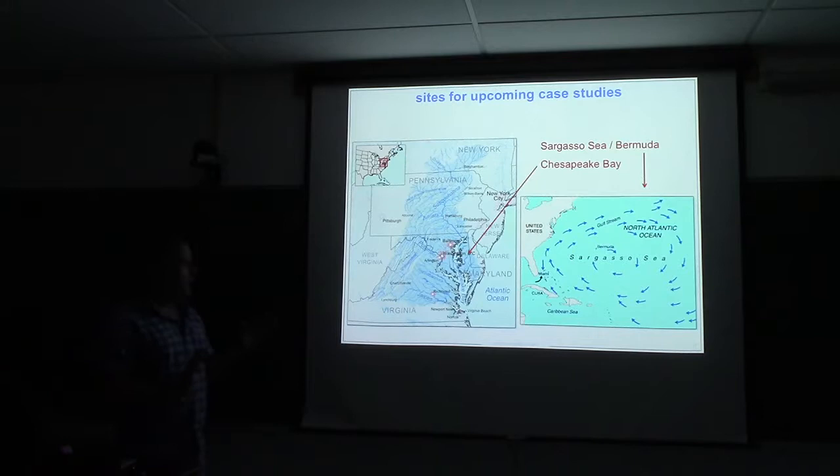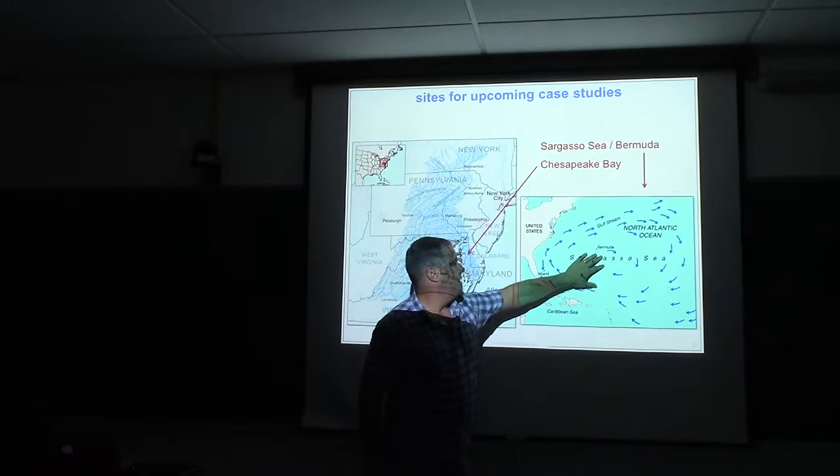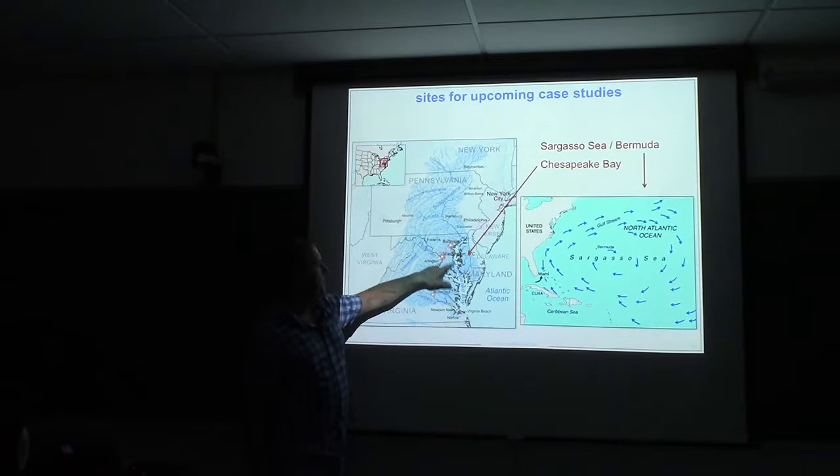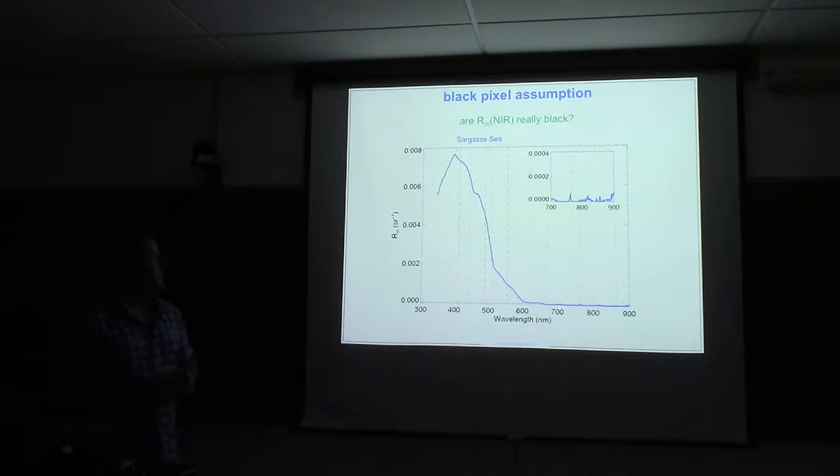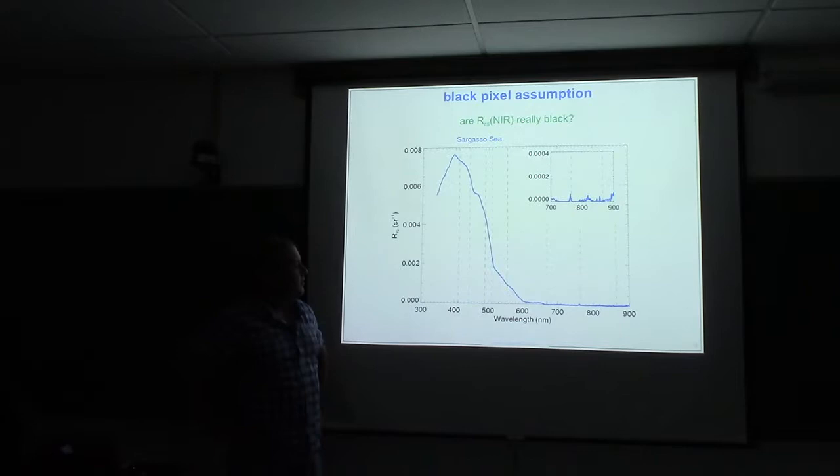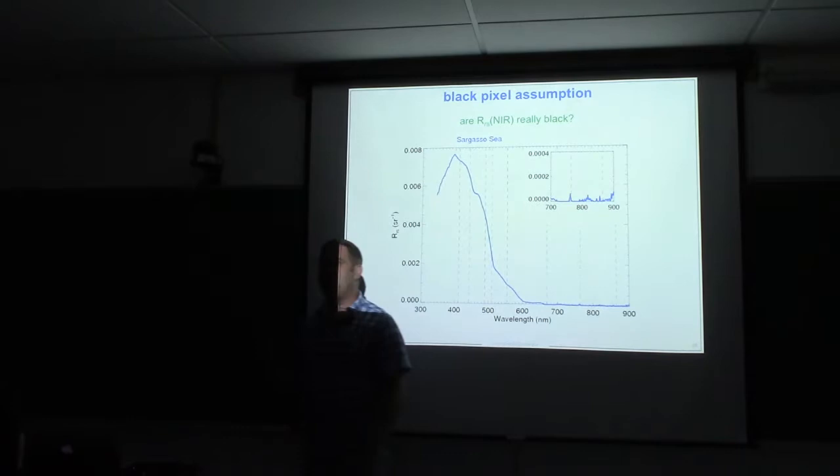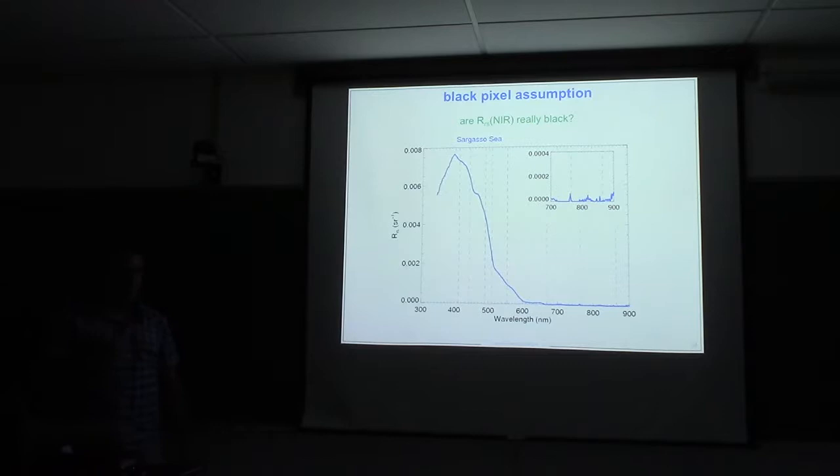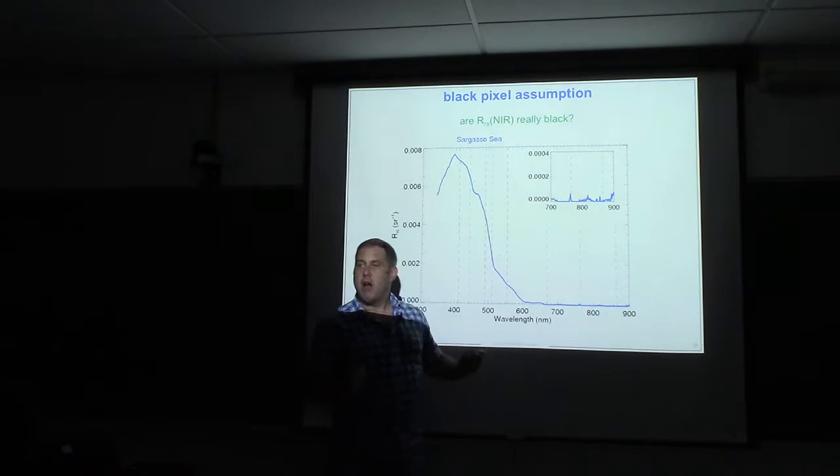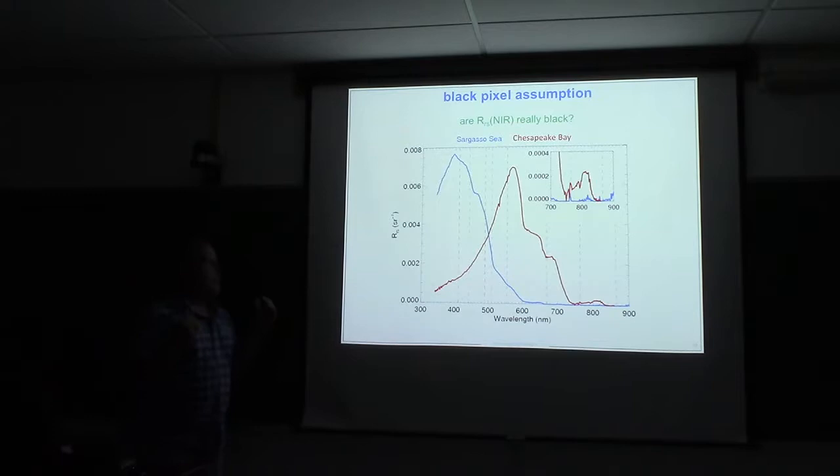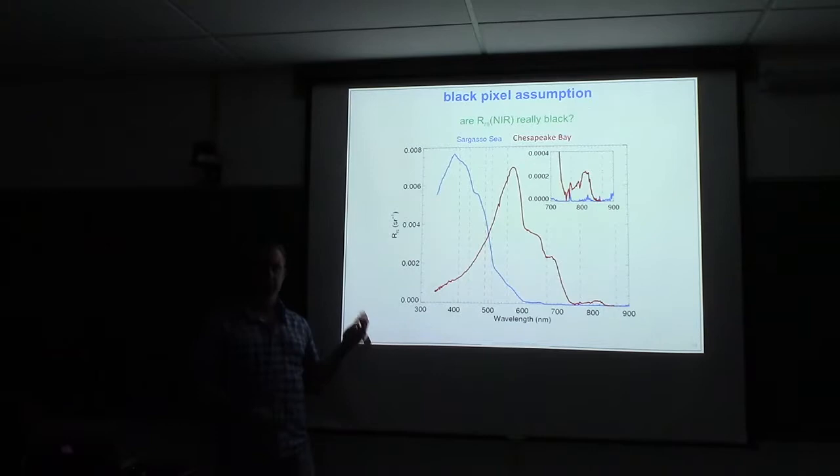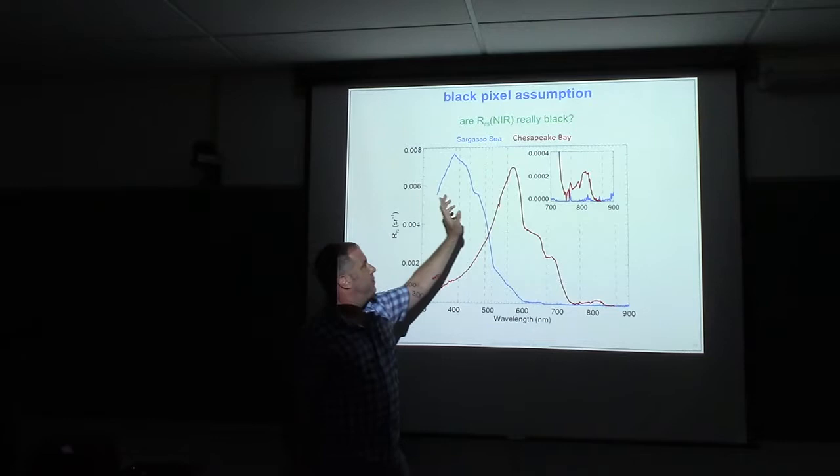All right, back to the black pixel assumption. So we're going to do a case study that deals with two different regions. The first is Sargasso Sea near Bermuda. The other is where Sean and I live, which is Chesapeake Bay. So the question I think being posed by the audience now is near-infrared remote sensing reflectance is really black. But if you look at the Sargasso Sea here and you zoom in, for the most part, that assumption holds. And this is why we were able to be as successful as we were through CZCS and OCTS and even part of SeaWiFS.